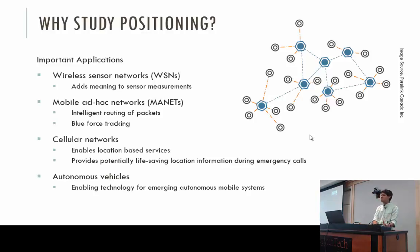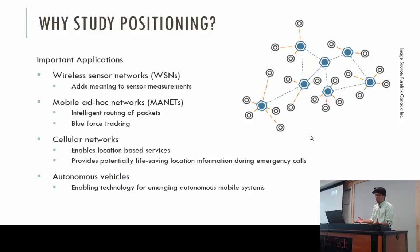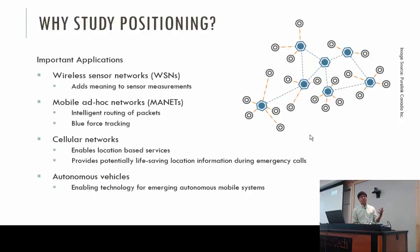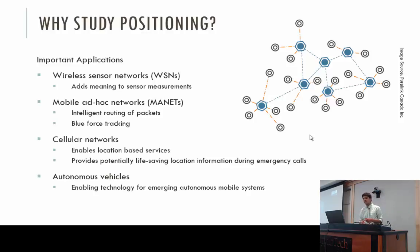Let me first point you to wireless sensor networks and mobile ad hoc networks. These are networks characterized by large numbers of devices, deployments that are typically not rigid, and the locations of devices are much more random and not known ahead of time. These networks usually do some sort of self-organization, and as part of that, they need to determine their location.